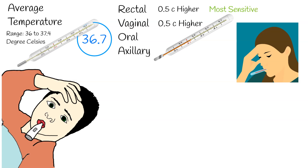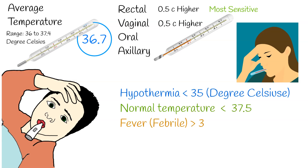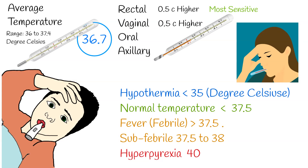Most sensitive temperature measurement is rectal temperature, because other types of measurement are not precise enough and can falsely exclude fever. There is not a single agreed-upon upper limit for normal temperature, but for most cases: less than 35 is hypothermia, up to 37.5 is normal temperature, and more than 37.5 is a fever. Temperature between 37.5 to 38 is called subfebrile temperature. Generally high temperature above normal is called febrile. More than 40 is hyperpyrexia.